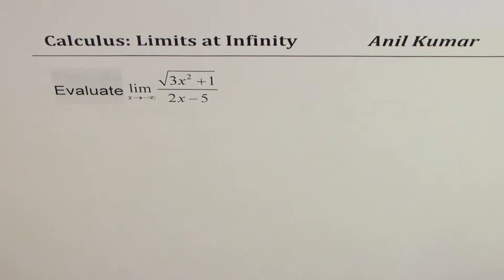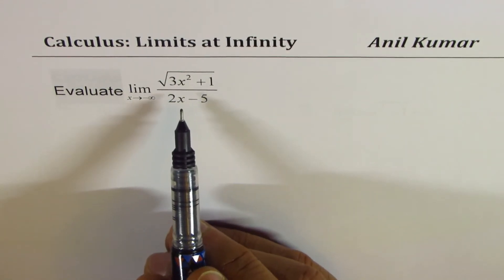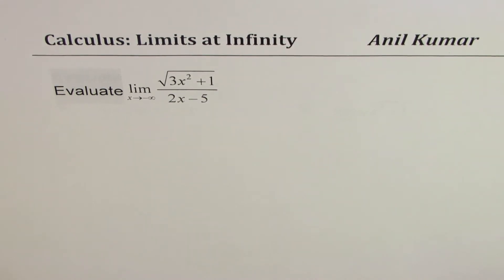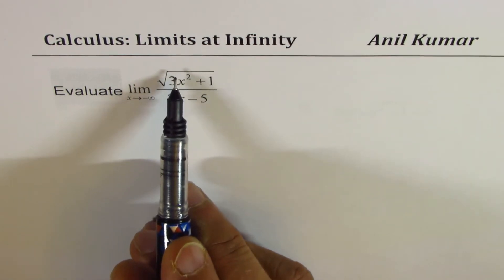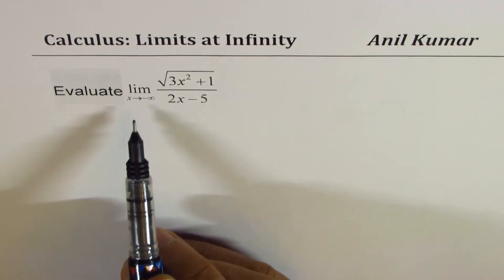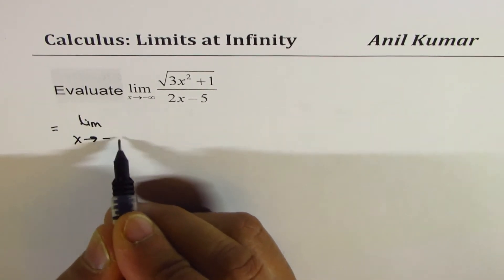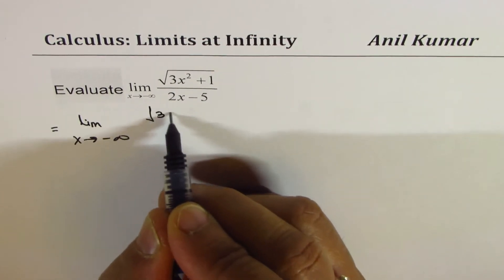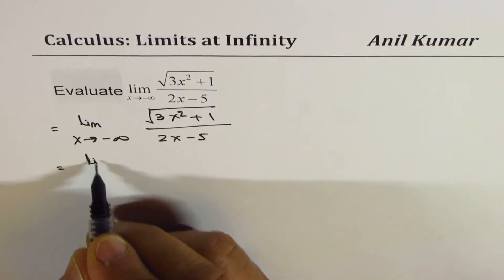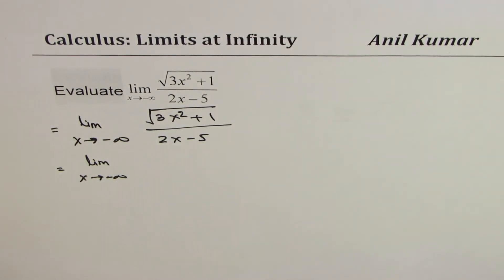Now I'll solve the same function but for x approaching minus infinity, using a shorter method. The function is square root of 3x squared plus 1 over 2x minus 5. The strategy remains the same for all questions involving square root with x squared.